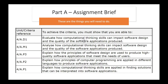P1: explain how computational thinking skills are applied in finding solutions that can be interpreted into software applications. P2: explain how principles of computer programming are applied in different languages to provide software applications. P3: explain how the principles of software design are used to produce high-quality software applications that meet the needs of users. M1: analyze how computational thinking skills can impact software design and the quality of software applications produced.